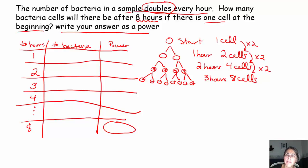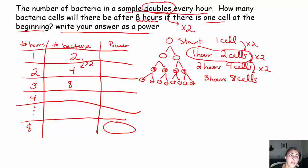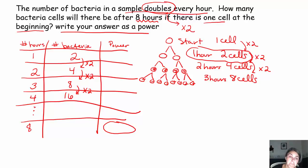After one hour we had 2, after two hours we had 4, after three hours we had 8. Doubling means multiplying by 2. So 2 times 2 is 4, 4 times 2 is 8, and 8 times 2 gets us to 16. After four hours, we'd have 16 bacteria cells. We are repeatedly multiplying by 2, which means the base is going to be 2.